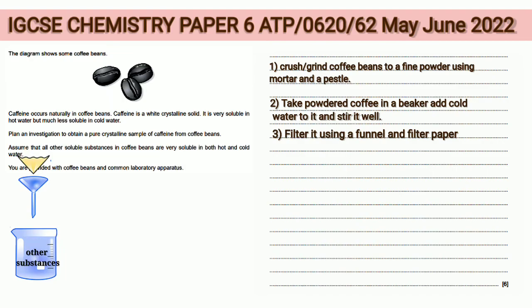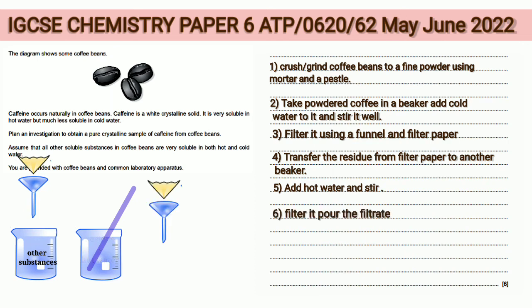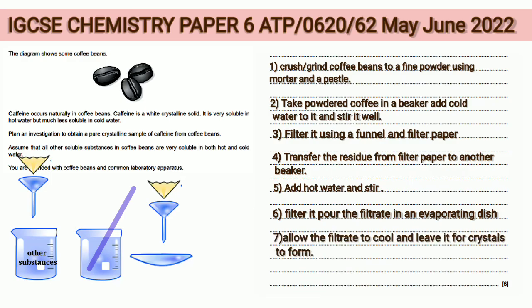Cold water has removed the other soluble substances; we are interested in the residue which contains caffeine. Fourth point: transfer the residue from the filter paper to another beaker. Fifth point: add hot water and stir. Sixth point: filter it and pour the filtrate into an evaporating dish. Seventh point: allow the filtrate to cool and leave it for crystals to form.